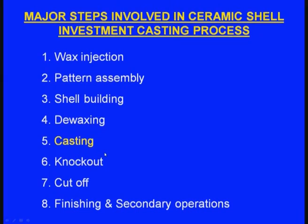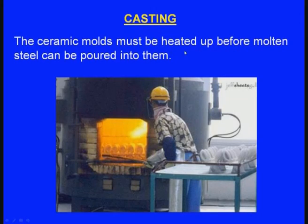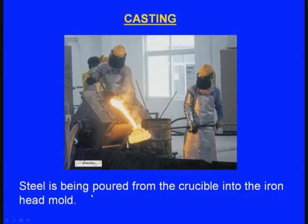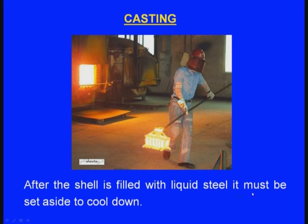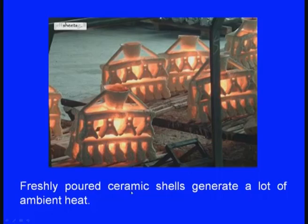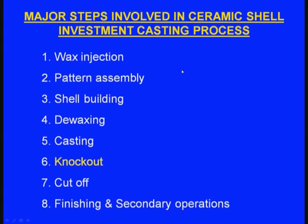Next is casting — pouring molten metal into the ceramic shell. The ceramic molds must be heated up before molten steel can be poured into them. Steel is poured from the crucible into the mold. After the shell is filled with liquid steel, it must be set aside to cool down. Freshly poured ceramic shells generate a lot of ambient heat, and after some time the metal will be cooling and solidifying.